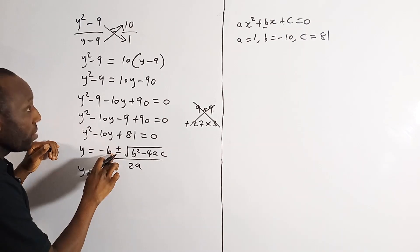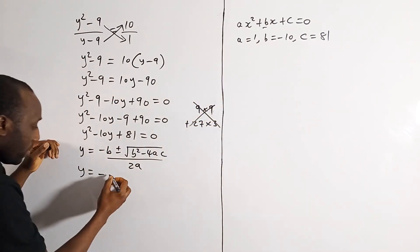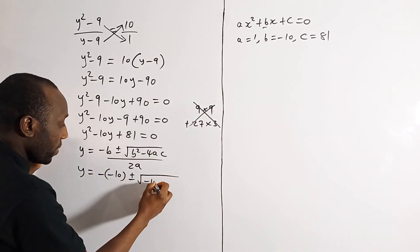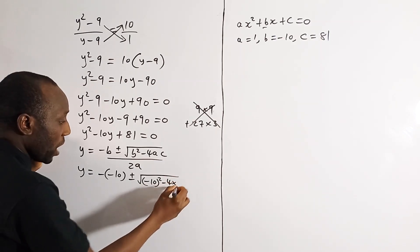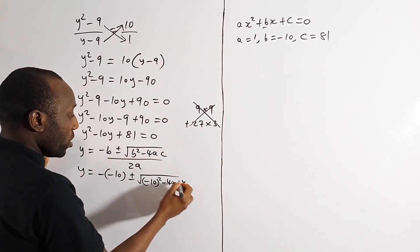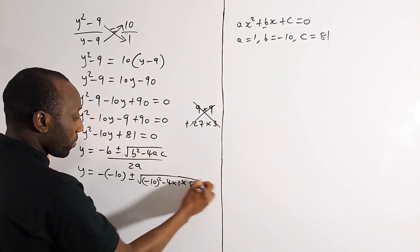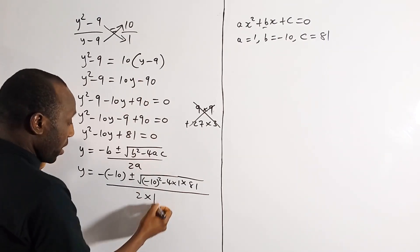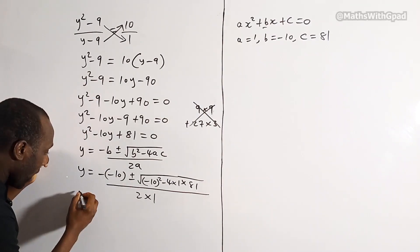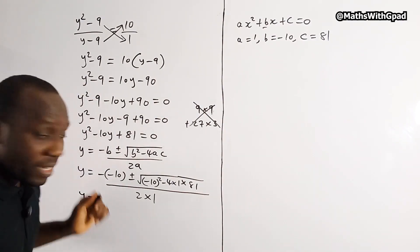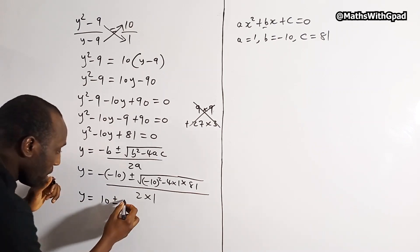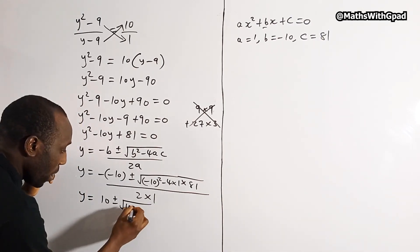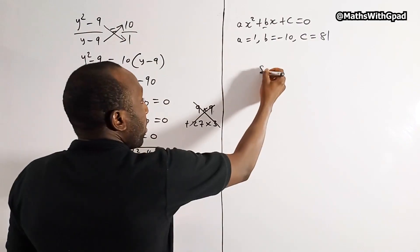Let's plug in those values. y equals negative b — b is negative 10 — so negative of negative 10 is 10, plus or minus the square root of b squared, which is negative 10 squared equals 100, minus 4 times a times c, which is 4 times 1 times 81, all divided by 2 times 1.